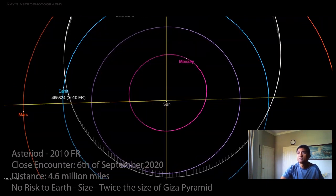This one is safely passing the Earth on September 6th, in a couple of days. It is coming relatively close to Earth.